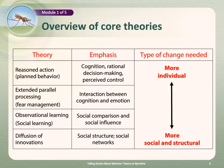One helpful way to organize these theories is along a continuum from theories that focus more on individuals to theories that focus more on societal structures, networks, or communities. I've shown how the four core theories can be arranged in this way. Reasoned action and fear management tend to be more individual, but observational learning and diffusion of innovations tend to be more social and structural. So you should choose a theory that matches the context of the behavior you're trying to influence.